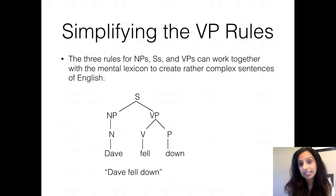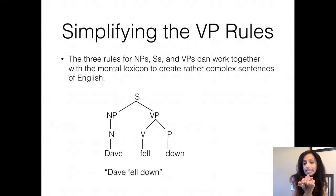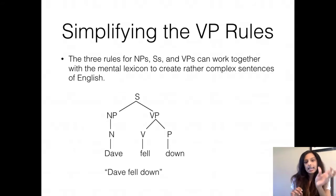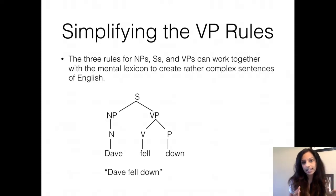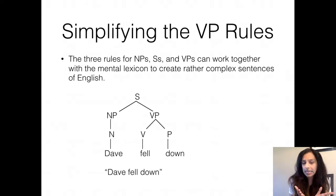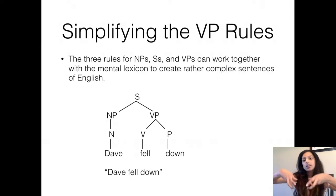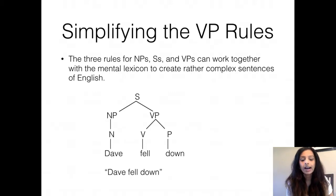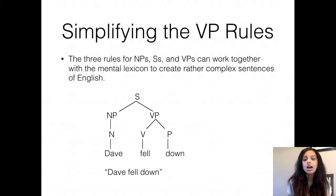For a sentence like 'Dave fell down,' first you identify all the categories of the words. Dave is a noun or noun phrase, fell is a V, and down is a preposition. Crucially, within the constituency, Dave is a noun phrase and 'fell down' is the VP. A sentence is always a subject and a predicate — the subject is very often the NP, and the VP is the predicate. So 'fell down' is part of the VP, and you have the V and the P within the VP rule to create 'Dave fell down.' I highly recommend you practice these tree structures in your notebook at home.